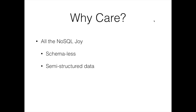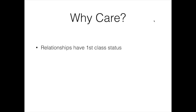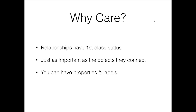Why should you care? First of all, you get all of the NoSQL joy — schemaless and semi-structured data. You get to escape from join hell when you're trying to bring together so many related things in a relational database. We all know what those queries can start to look like when we get deeper and deeper. And related directly to that: speed. When it comes to connected data, you cannot beat a graph database. One of the reasons for that is node traversal across relationships, and the relationships have a first-class status — they're just as important as the things they are connecting. Relationships as well as nodes can have properties and labels, and relationships can go in multiple directions.